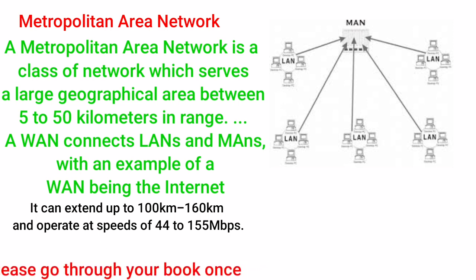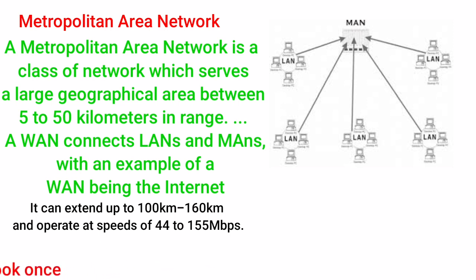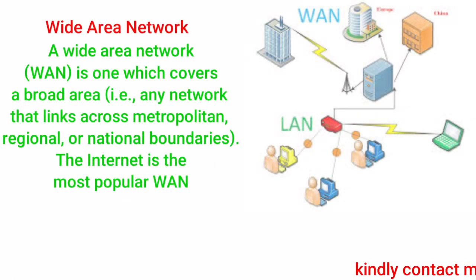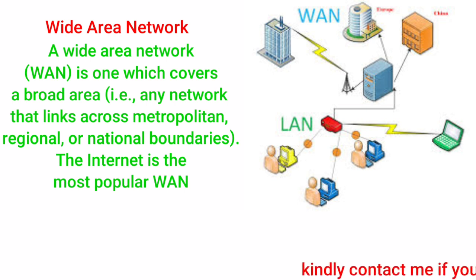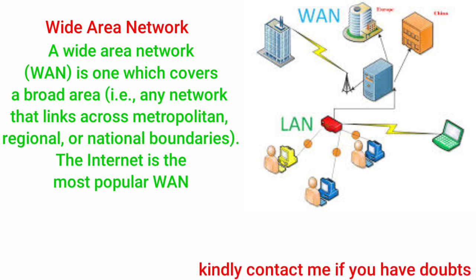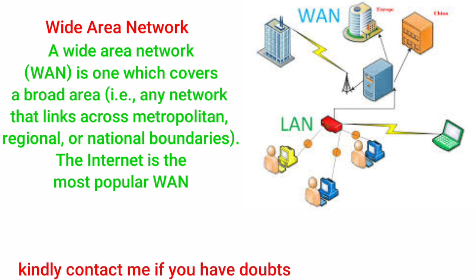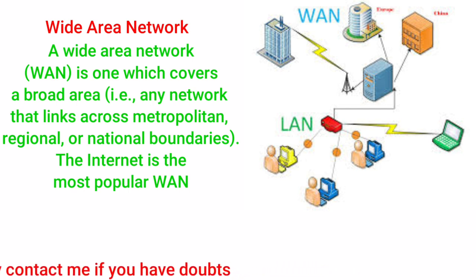A WAN connects LANs and MANs, with an example of one being the internet. Wide area network: a WAN is one which covers a broad area — that is, any network that links across metropolitan, regional, or national boundaries. The internet is the most popular example.